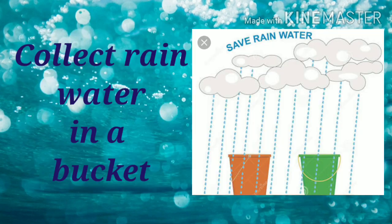Since rainwater is fresh water, we can collect rainwater in buckets or any other containers and use it for cleaning, washing, or even for watering the plants. Rainwater is a very good source of fresh and clean water.